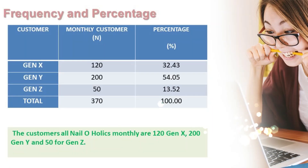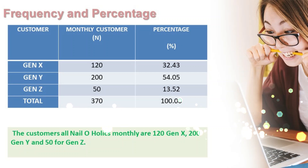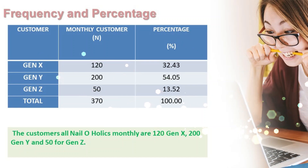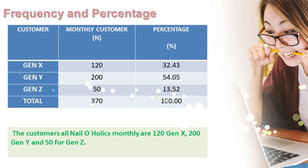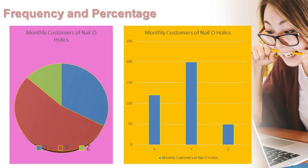Table number three covers customers of Nailaholics, which includes Gen Z, Gen X, and Gen Y. For Gen X, we have 120 customers. For Gen Y, we have 200 customers. And for Gen Z, we have 50 customers. The total is 370, which will be your base. The percentage for Gen X is 120 over 370, giving 32.43%. For Gen Y, 200 over 370 gives 54.05%. And for Gen Z, 50 over 370 gives 13.52%. Totaling all gives 100%. Here is the result of table 3 presented in a pie chart and bar chart.